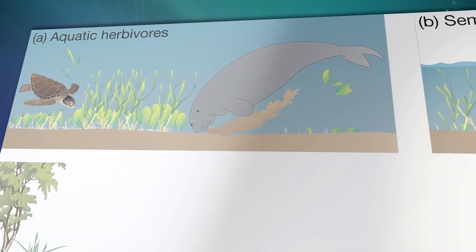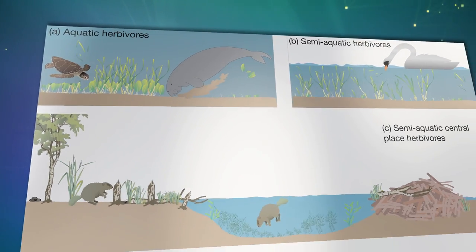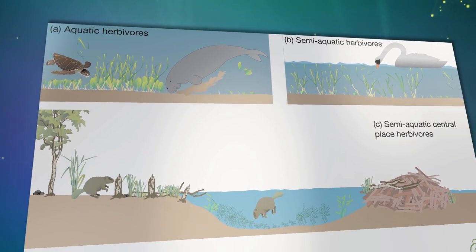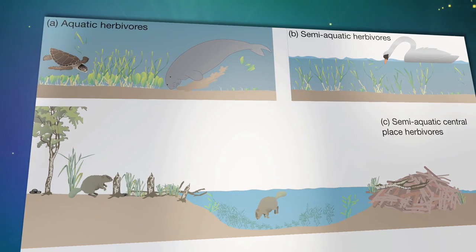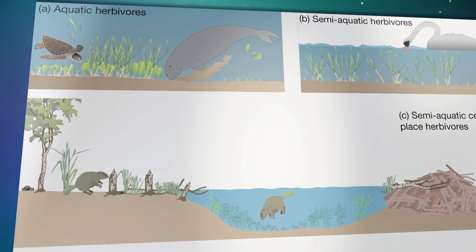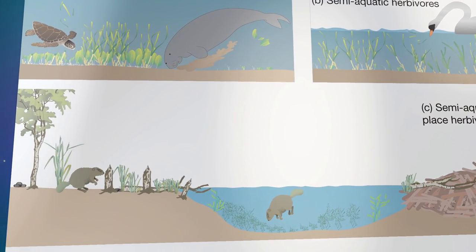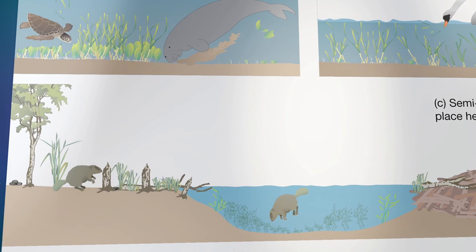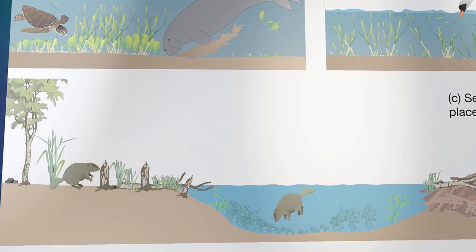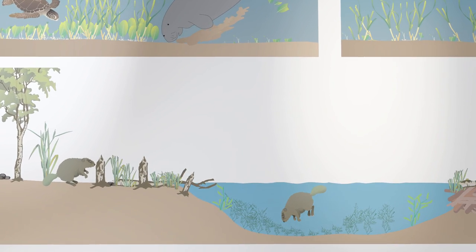You also have a number of semi-aquatic herbivores that live both in the water and on the land. They graze in the water but also graze on the land, and thus have very strong impacts on land vegetation as well.